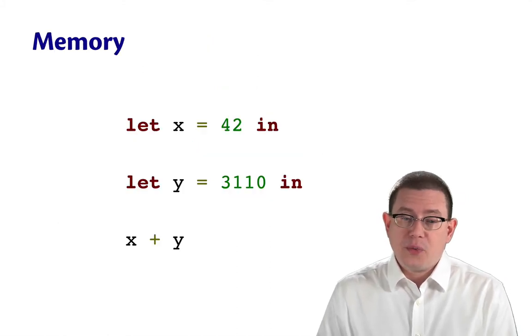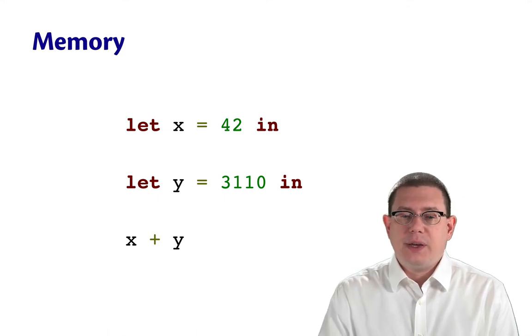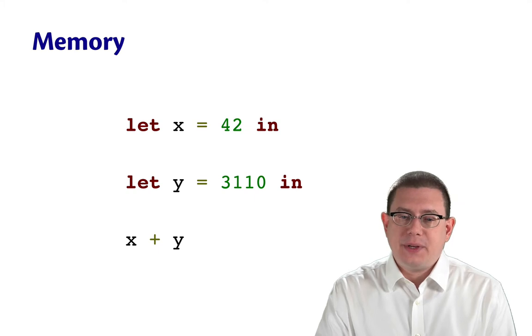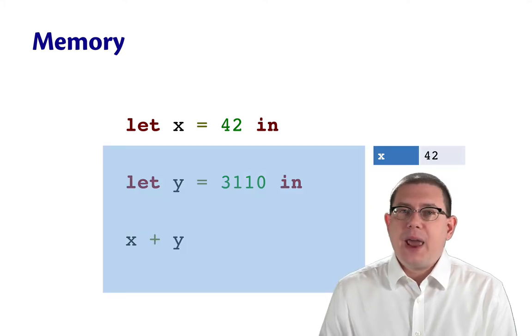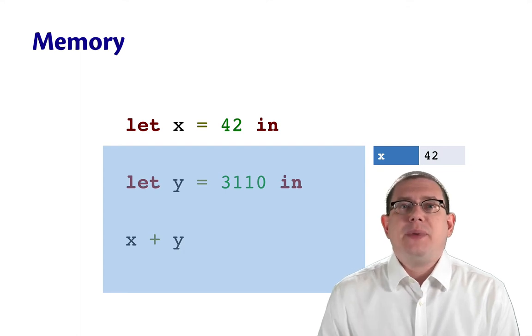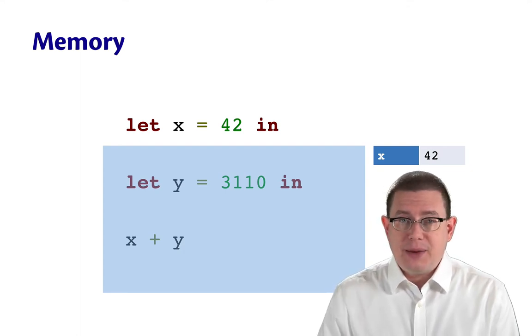For example, with this little program here that binds x and y and then uses them. Instead of doing substitution, what really happens at runtime is there's some area in memory in which the value of x is stored. It might be a register. It might be in main memory.